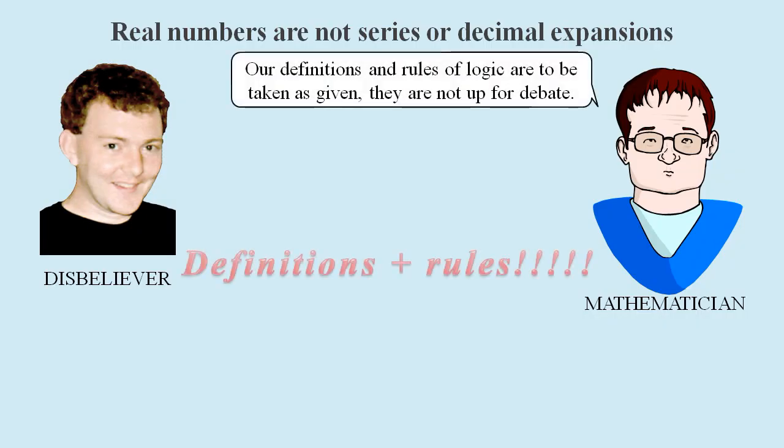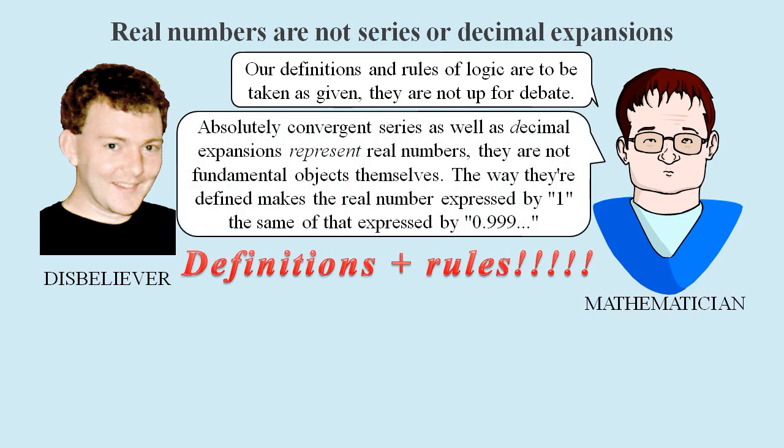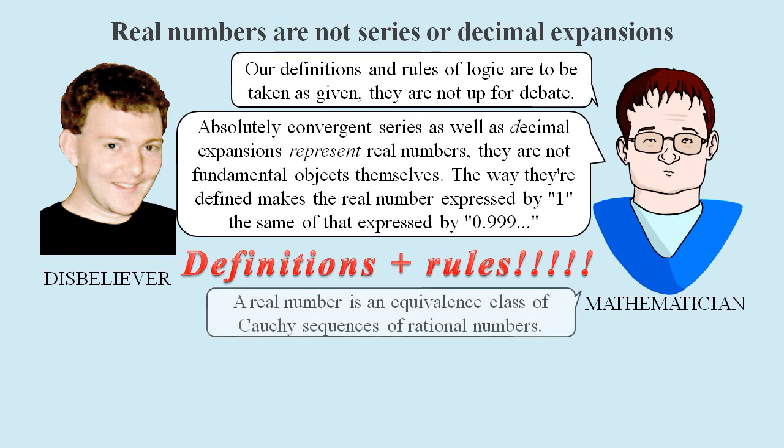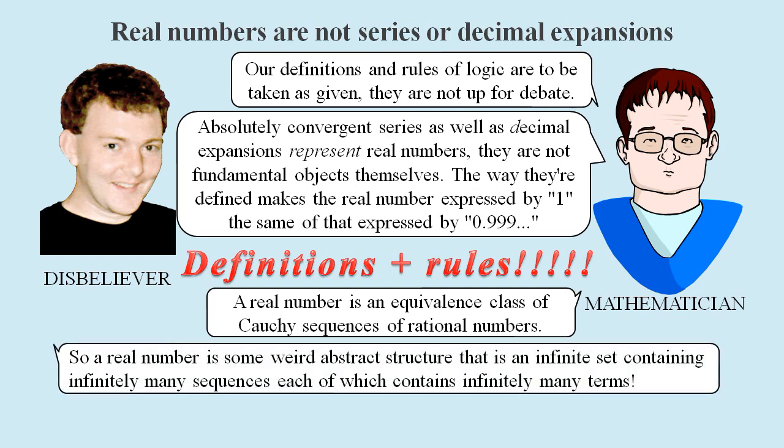But we are not allowed to question the mathematicians' rules. And anyway, these written symbols only represent real numbers. And real numbers themselves are the true fundamental objects, not their written representations. So 1 and 0.9 recurring just happen to represent the same real number. Fundamentally, a real number is an equivalence class of Cauchy sequences of rational numbers, which means it's some weird abstract structure that's an infinite set containing infinitely many sequences, each of which contains infinitely many terms. What could be easier to understand or to conceive of in the mind than that?